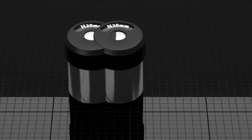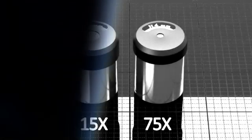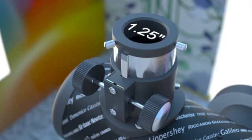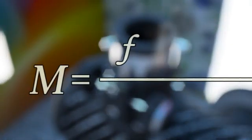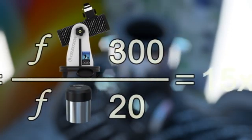The FirstScope comes packaged with 20mm and 4mm eyepieces, delivering 15x and 75x magnifications respectively. The FirstScope is compatible with any 1.25 inch standard eyepiece. To calculate magnification, simply divide the focal length of the scope by the focal length of the eyepiece in question.